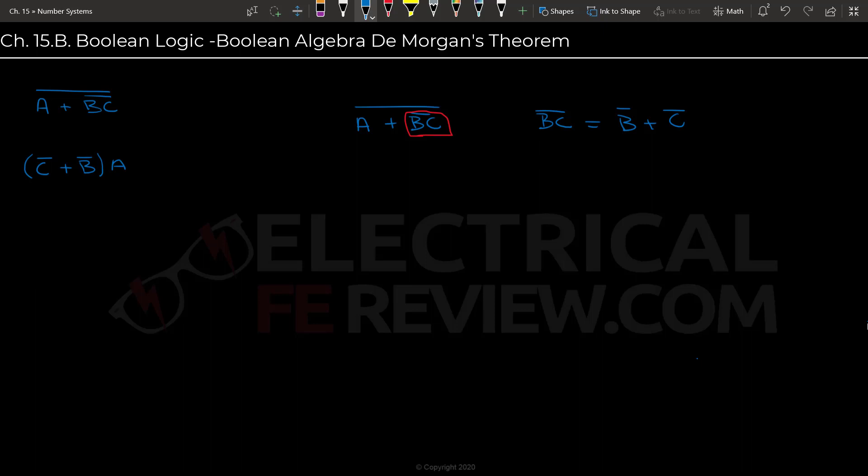So we can just go ahead and replace that. And so we have A or B NOT or C NOT, NOT.